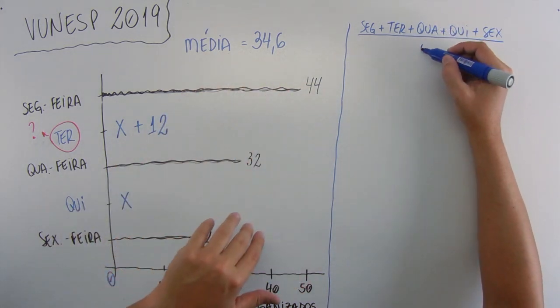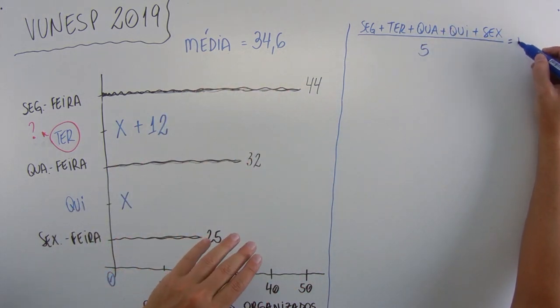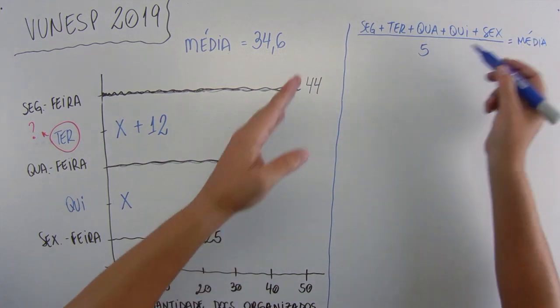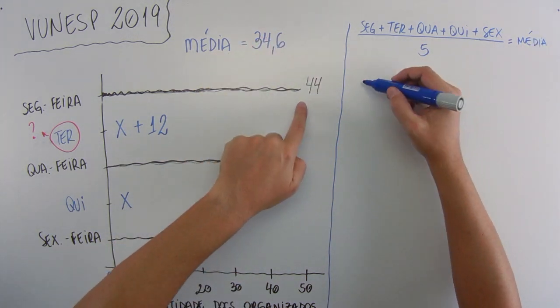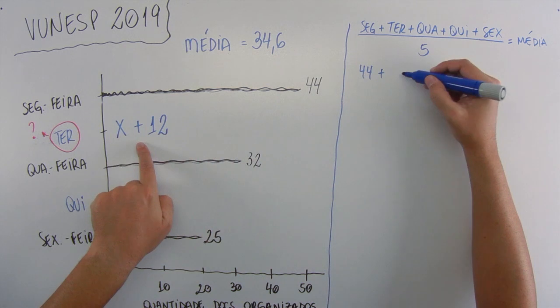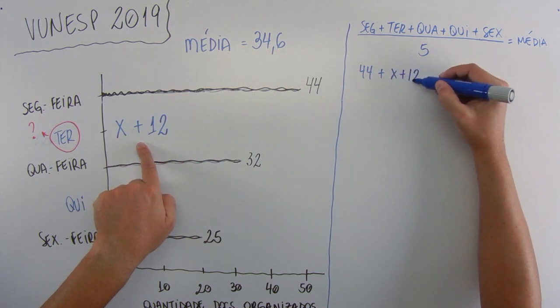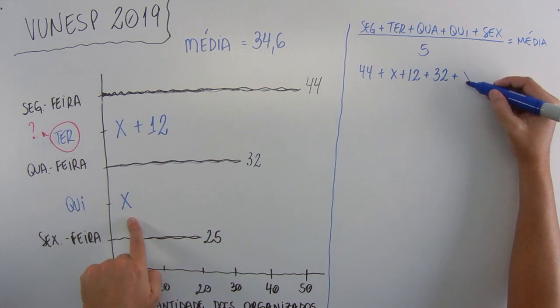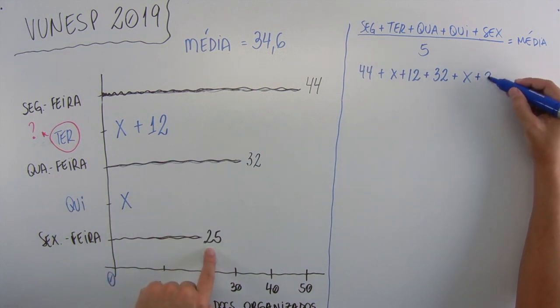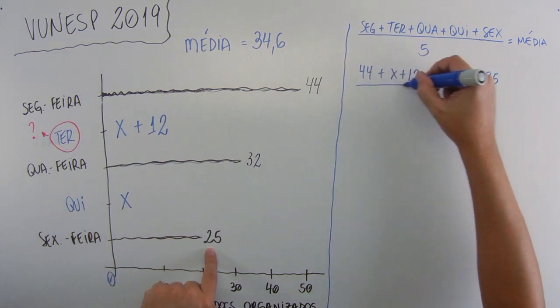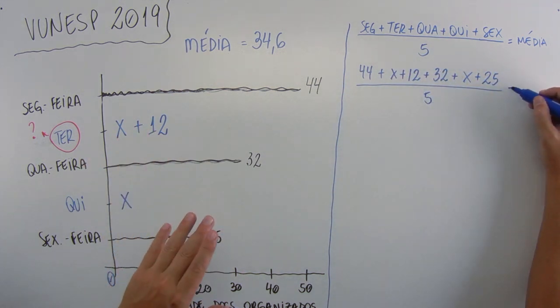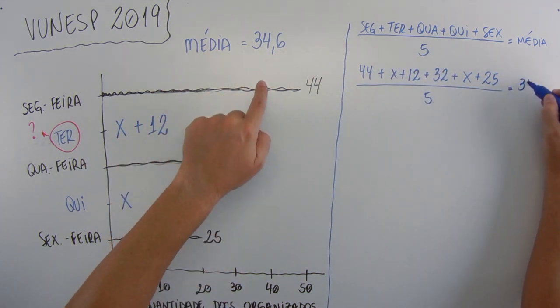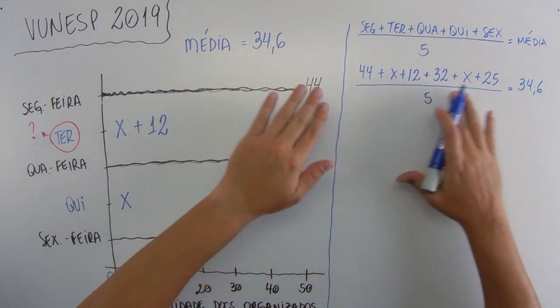Divided by 5, which is the quantity of days of the week, which will give the mean. This is what you should have thought. So, Monday, 44. Plus Tuesday, which is X plus 12. Plus Wednesday, which is 32. Plus Thursday, which is X. Plus Friday, which is 25. All this divided by 5, which will give the mean, which is 34.6. Done. Now, just develop this.